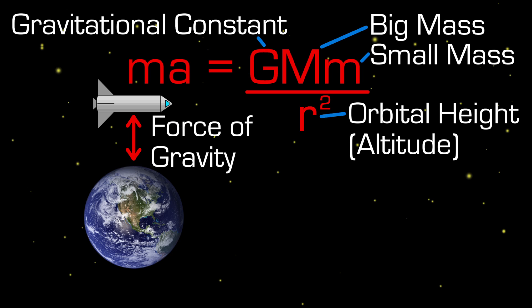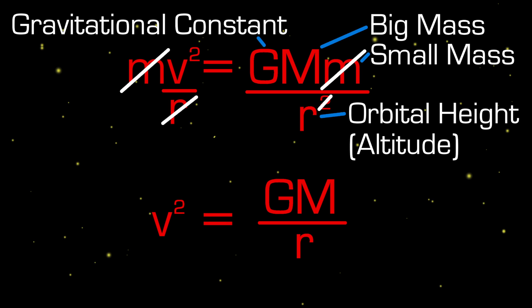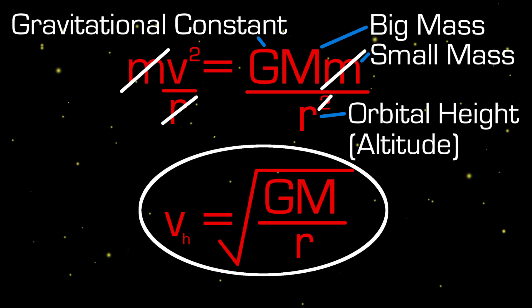We are only concerned with the vertical acceleration, and this can also be written as v² over r according to rotational dynamics. Now the small m's cancel, along with an r from each side. This arrangement is useful to us because it relates velocity with altitude. Depending on how far away you want to get from Earth's problems, the equation will give us the horizontal velocity required to orbit at that height.